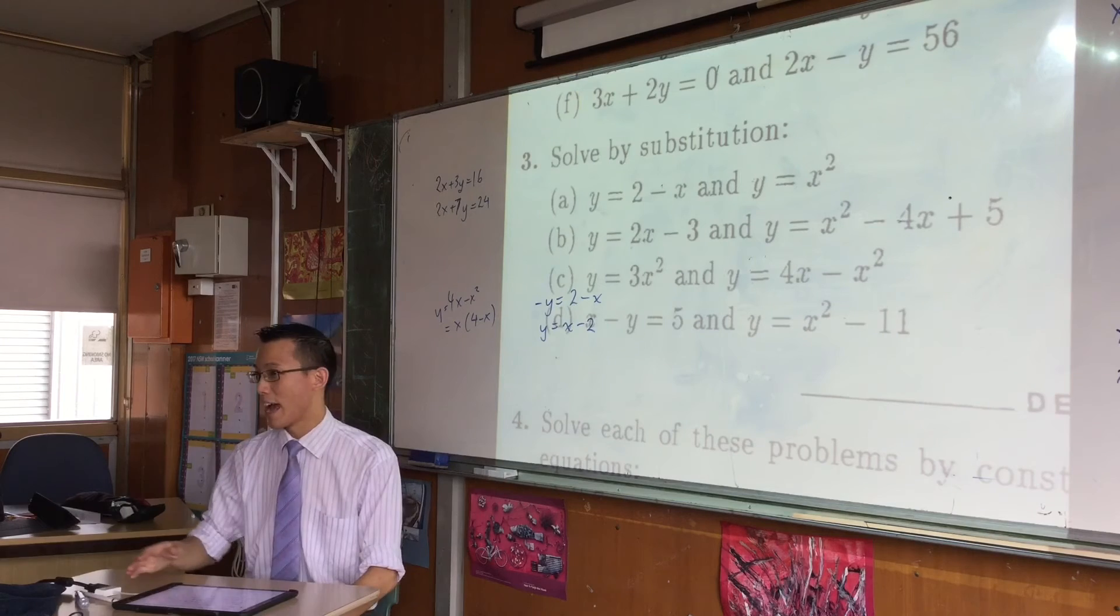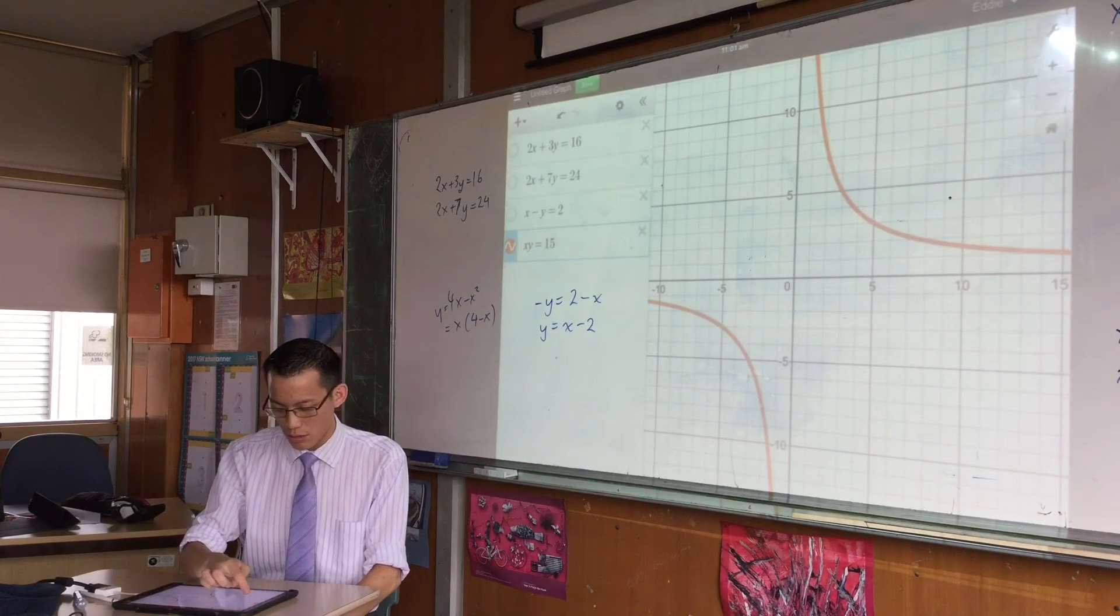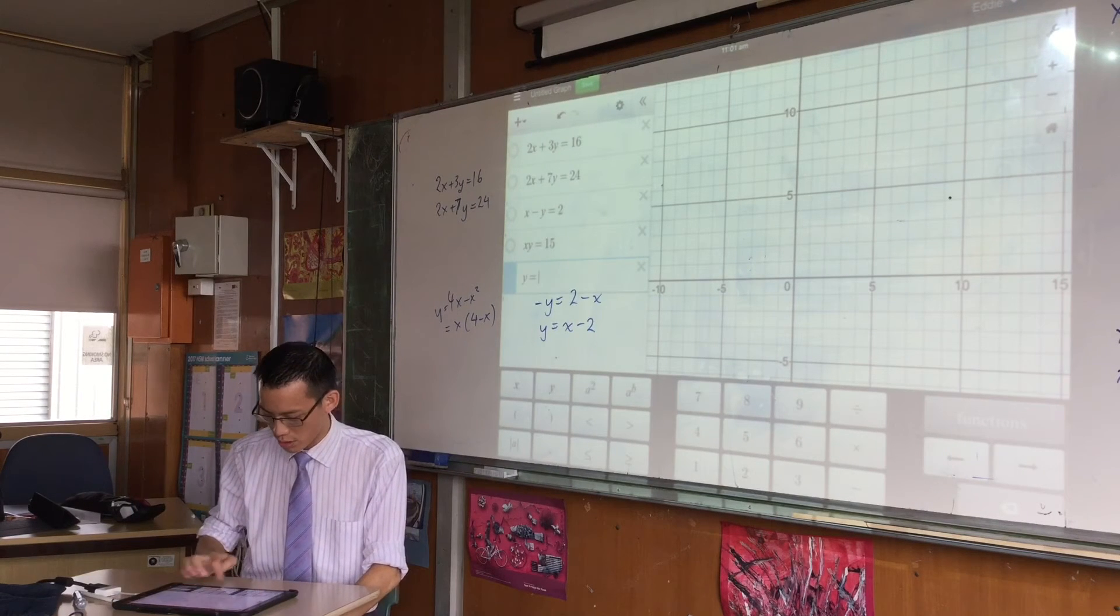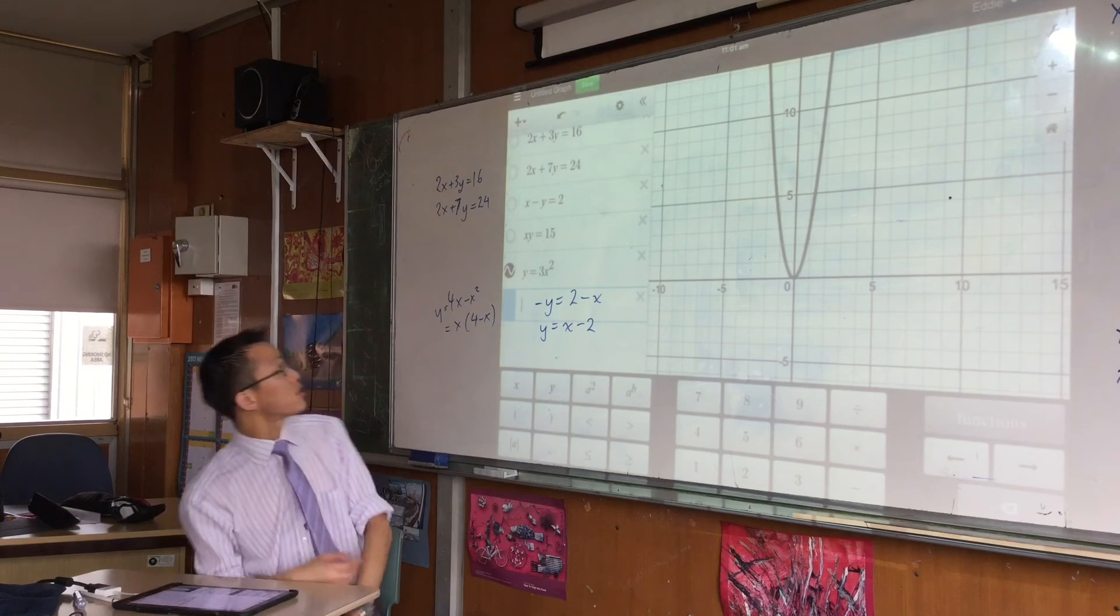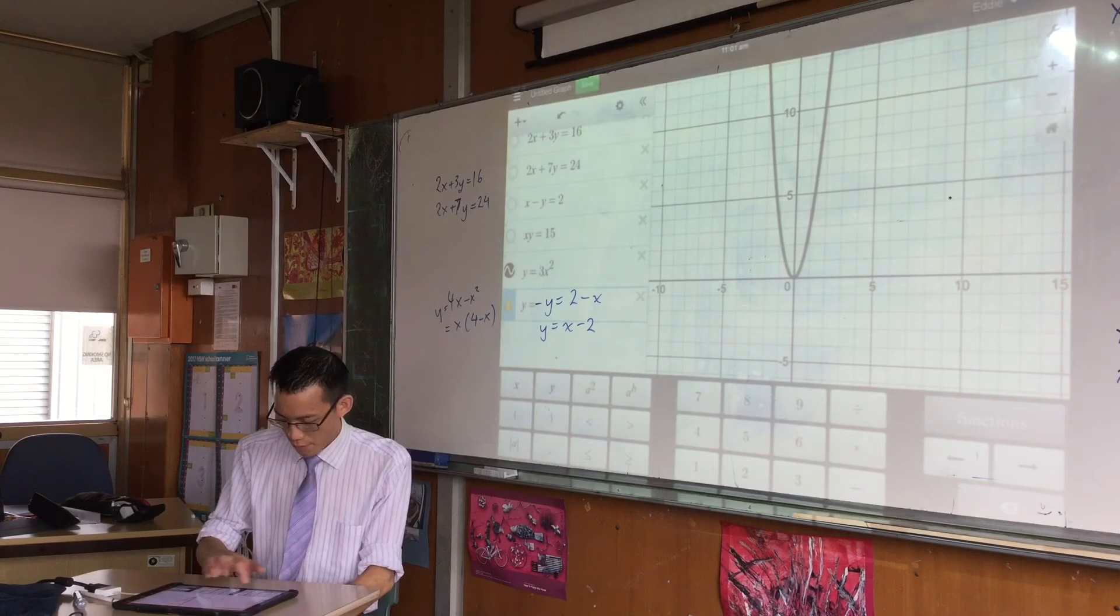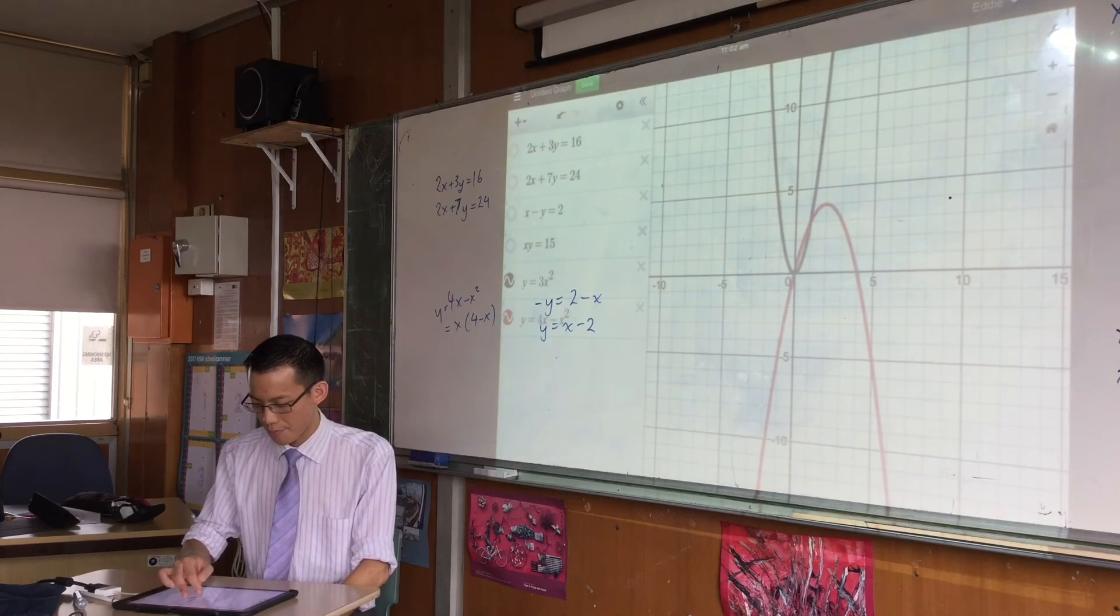Now I'm going to encourage you to have your textbook there and Desmos open in the other window so that you can do this. You can say all right, I think I know what it looks like: y equals 3x squared. Good. And then what did we just say? y equals 4x minus x squared.